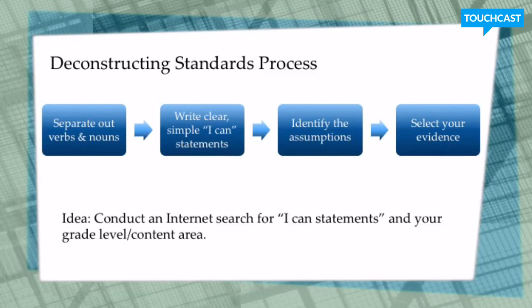This process also works with Oklahoma academic standards or national Common Core standards, and it helps you articulate to your students the expectations they are going to meet. An idea would be to conduct an internet search for I can statements in your grade level or content area — Pinterest is a great place to look because a lot of them have posters already made. I've seen teachers use these with parents, giving them I can statements instead of formal standards, so the child can take ownership of their learning by checking off what they can do.